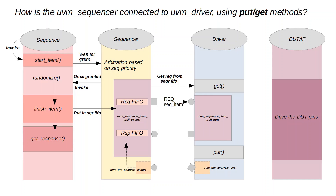Similar to get_next_item, you have the get method, which pops from the request sequence item FIFO of the sequencer and gets the next item. Then it gets the values and drives the DUT pins through the interface. Once that's done, it calls the put method. This time you put the modified response — for example, an error response or some dependency that you need to send back to the sequence for the subsequent transaction — and send it through the analysis port to the export port of the sequencer.